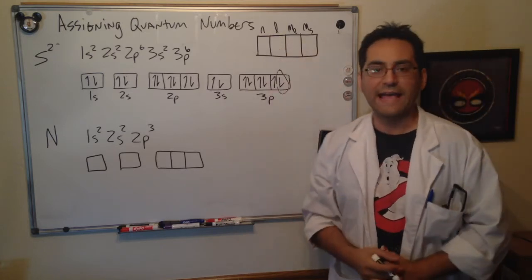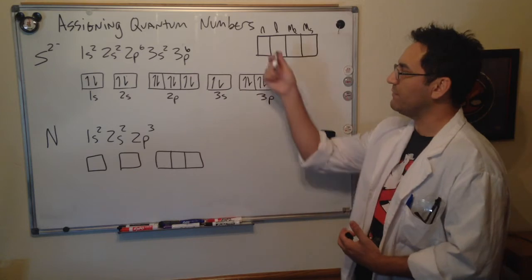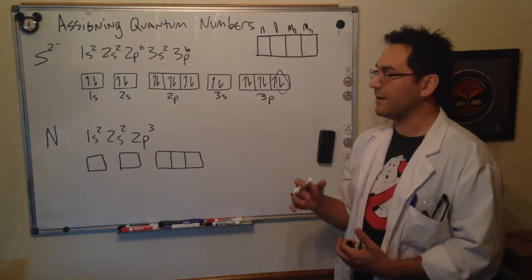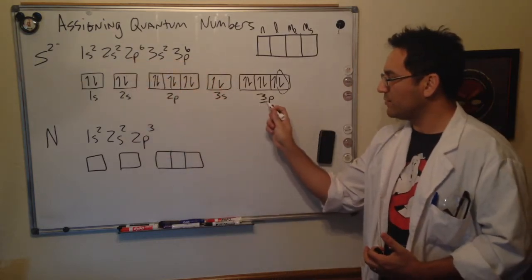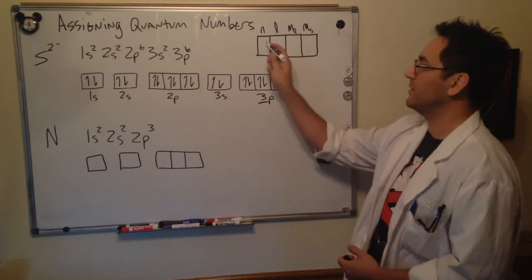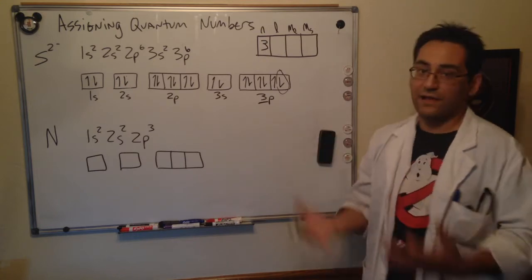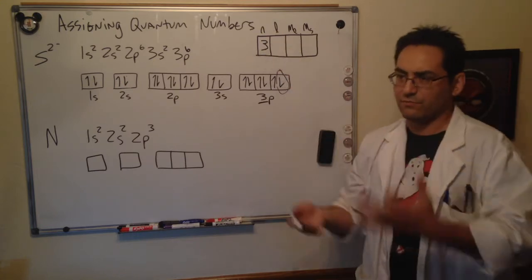Now let's determine the quantum number n. n is going to be the principal energy shell where we find this electron, and remember n is determined by this number here. So the principal quantum energy level is three for this electron, so we would put a three here.